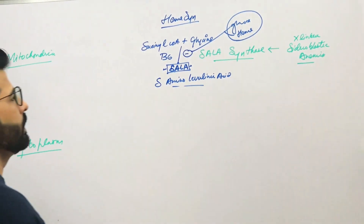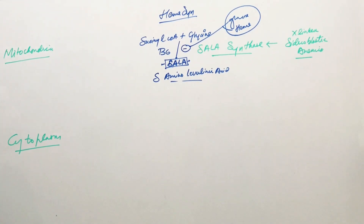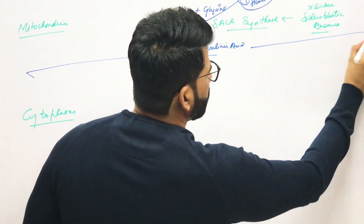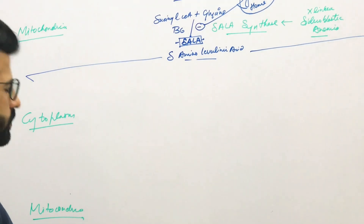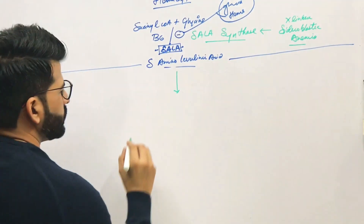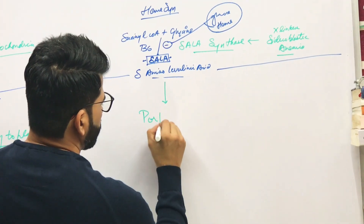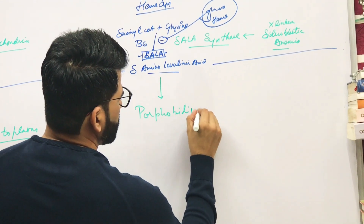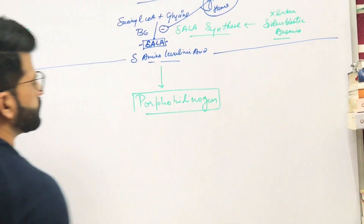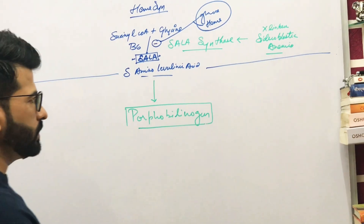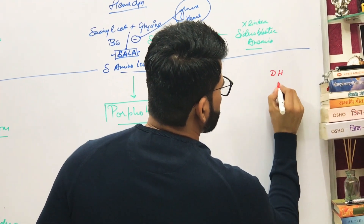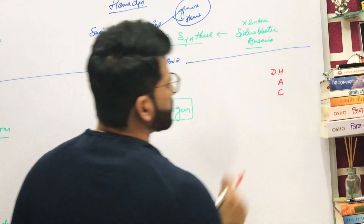This delta-aminolevulinic acid from the mitochondria will now enter into the cytoplasm and will convert into porphobilinogen.